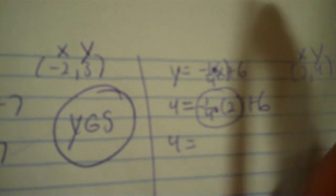So times comes first. I take negative 1 fourth times 2. That's negative 1 half plus 6. So I take negative 1 half. Negative 1 half plus 6, 5 and a half.